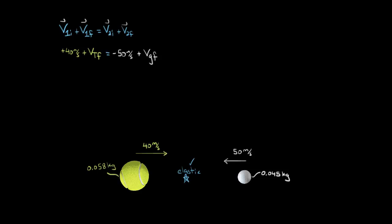We can solve this for vt final. I subtract 40 meters per second from both sides and get that the final velocity of the tennis ball equals vg final, plus negative 50 minus 40, which is negative 90 meters per second.